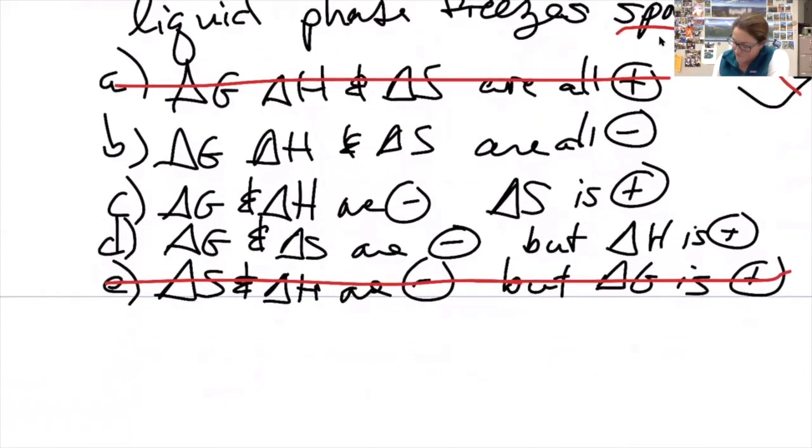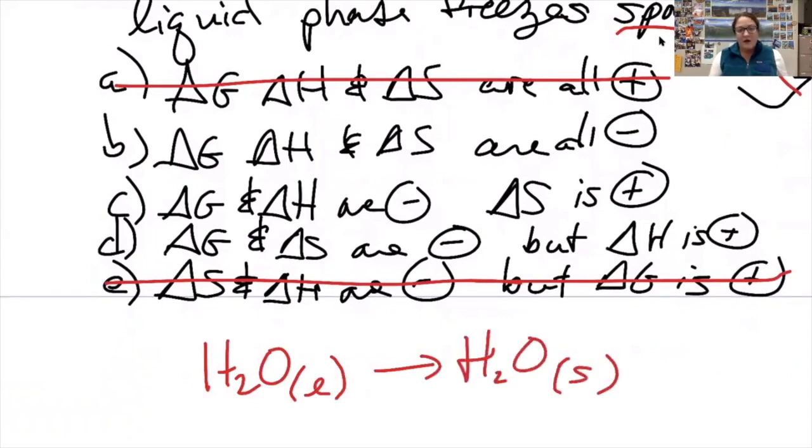Now let's look at freezing. I'm going to just use water because I can wrap my head around that. Regarding delta S, is this reaction increasing in disorder or decreasing in disorder? Solids are definitely more ordered than liquids, so it's going to give us a negative delta S value. So now I can rule out C.